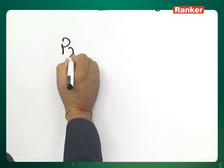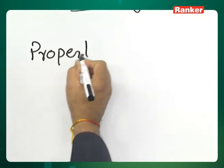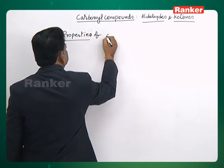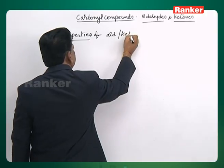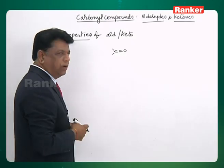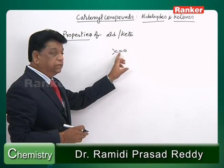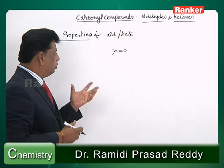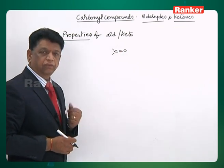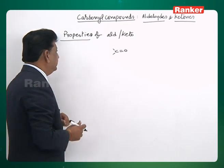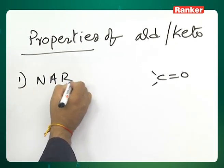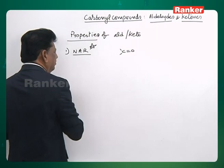Now let us take the second part, that is the properties of carbonyl compounds - aldehydes and ketones. Both these compounds will have a C double bond O. The C=O is very characteristic in showing the addition reaction because it is unsaturated and it undergoes addition reaction. Specifically, it becomes O minus and C plus. C plus is more reactive, therefore nucleophilic addition reaction is the best reaction. The first is nucleophilic addition reaction - this is the most characteristic reaction of the carbonyl compounds.